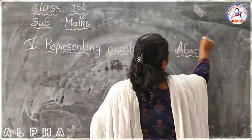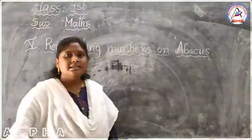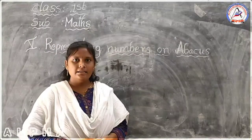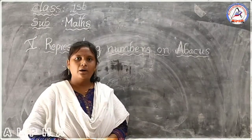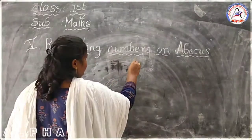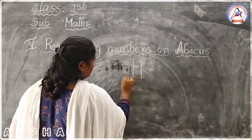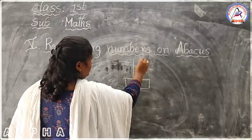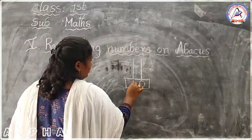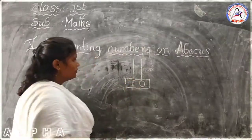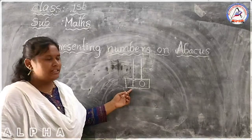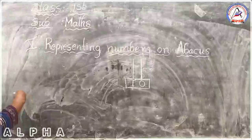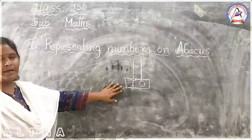What is Abacus? Abacus is a tool for counting. In Abacus, we have two rods. One rod indicates the ones place and another rod indicates the tens place. This is the Abacus. Let's see how we can represent numbers on Abacus.